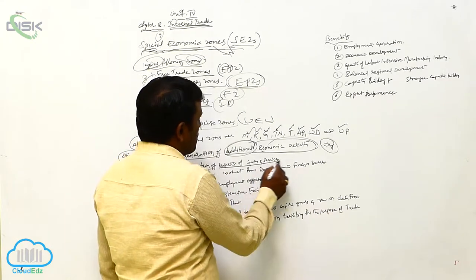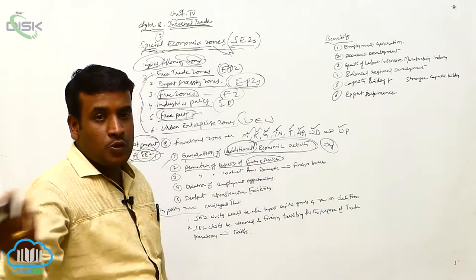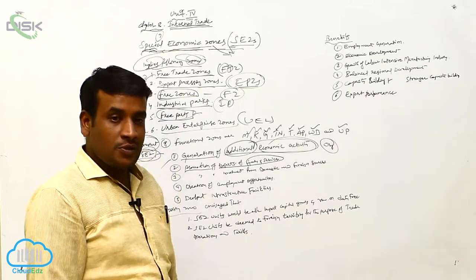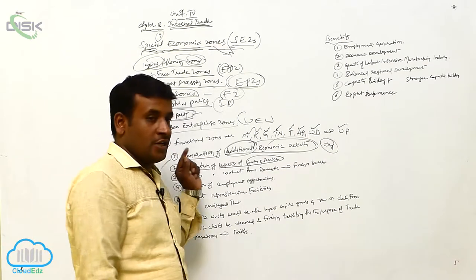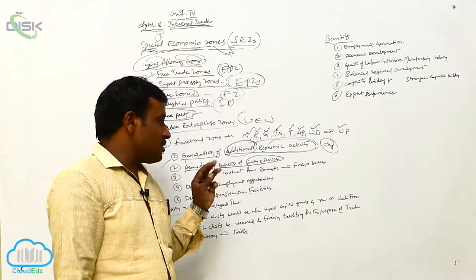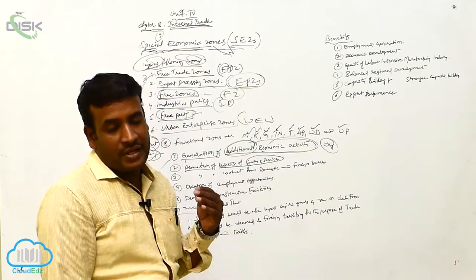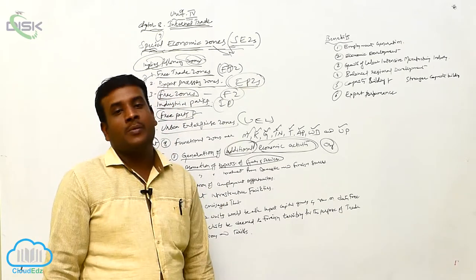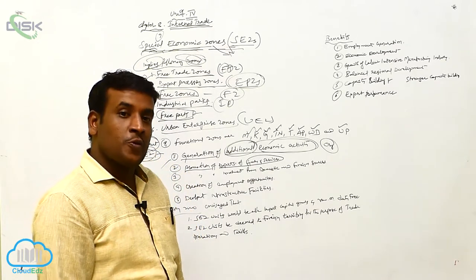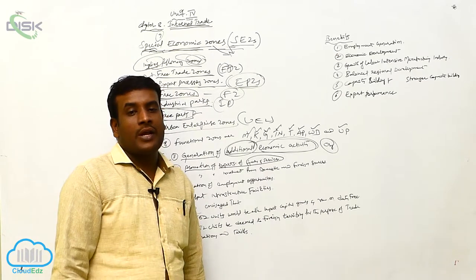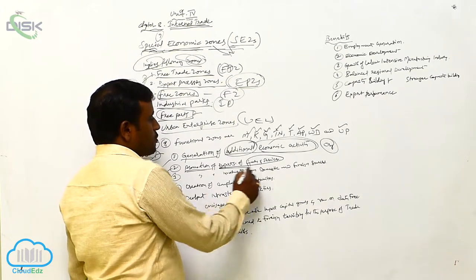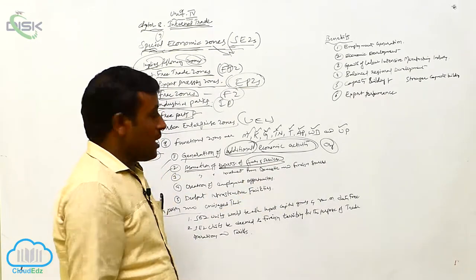Secondly, promotion of exports of goods and services. Promoting the exports of our goods from India to other countries — exporting. For that purpose also, we establish the SEZ. With this SEZ, a lot of organizations, business organizations, industries, and companies are established. Their manufacturing activities take place, and more and more products will be produced. The surplus produced products will be exported to other countries, and then automatically our economic position will be developed. So promotion of export of goods and services is another objective.